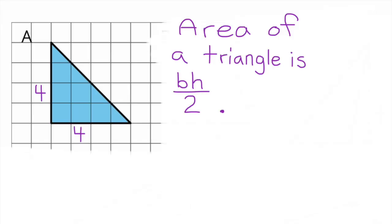The formula for finding the area of a triangle is base times height divided by 2, or half of the base times height.